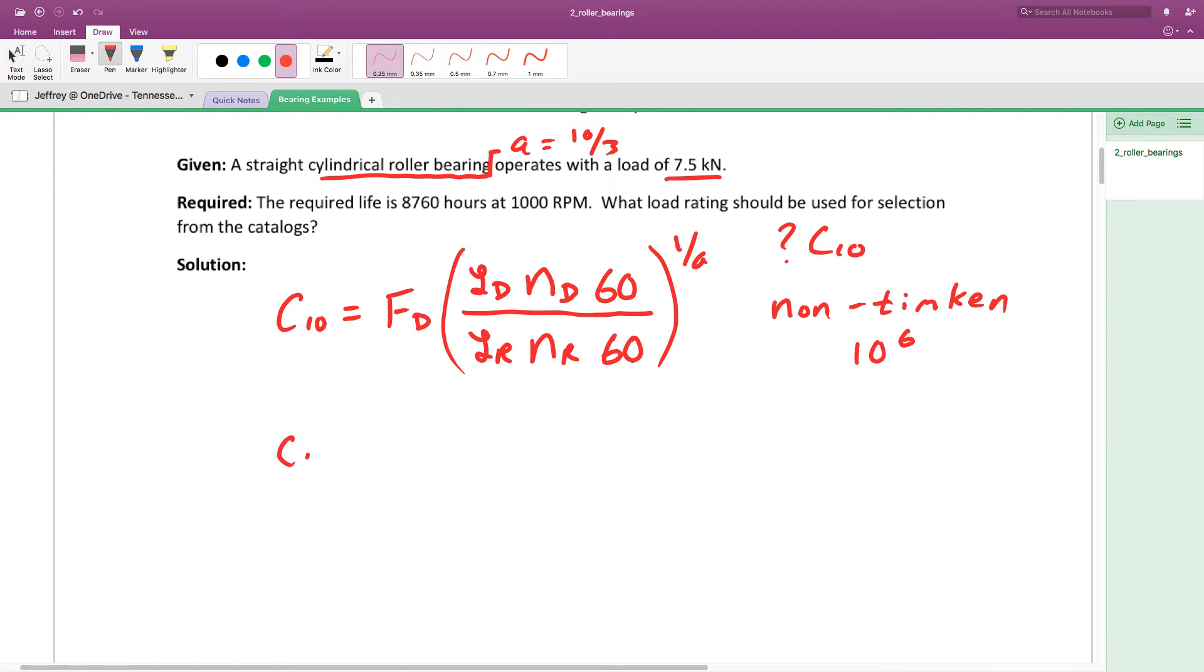To solve for C10, we have everything we need. The design load is 7.5 kN, the required life is 8760 hours. This entire bottom term resolves to cycles, so we can replace it with 10^6. Then 1 over 10/3 becomes 3/10. Solving for C10, we get a value of 49.1 kN.